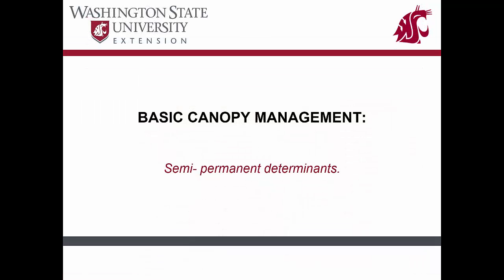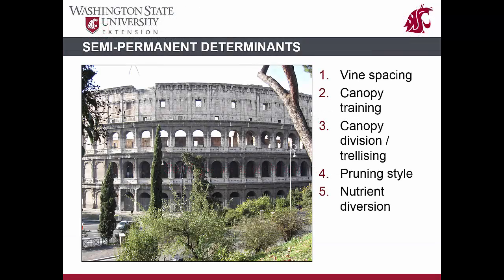Understanding the concept of balance helps to place different canopy management techniques into context. Balance can be achieved through multiple means. Some canopy management principles are put into place at the time of vineyard establishment or shortly after. These semi-permanent means for managing the vine's canopy are akin to having a base level of funds in the energy checkbook. Other practices need to be done on an annual basis and are fine-tuning adjustments. A few of the more common semi-permanent determinants for canopy management are vine spacing, canopy training methods, canopy division and the use of divided trellising systems, dormant pruning style, and nutrient management and diversion.